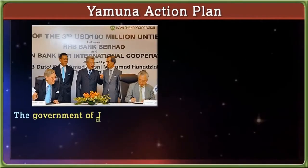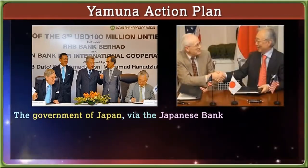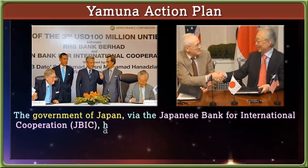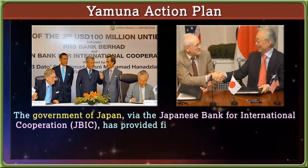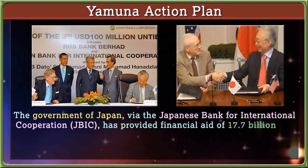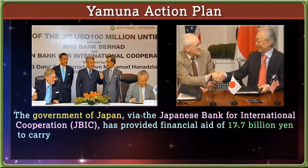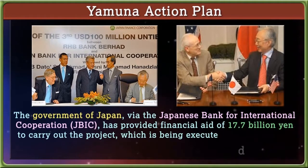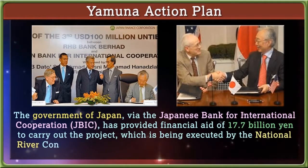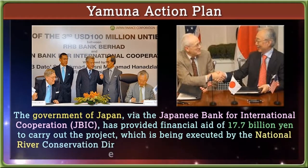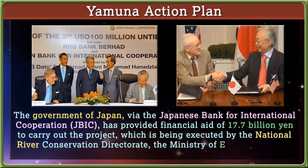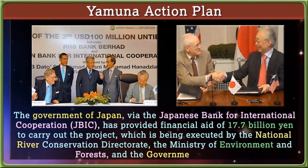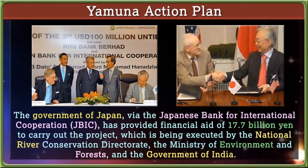The government of Japan, via the Japanese Bank of International Cooperation (JBIC), has provided financial aid of 17.7 million yen to carry out the project, which is being executed by the National River Conservation Directorate with the Ministry of Environment and Forests, Government of India.